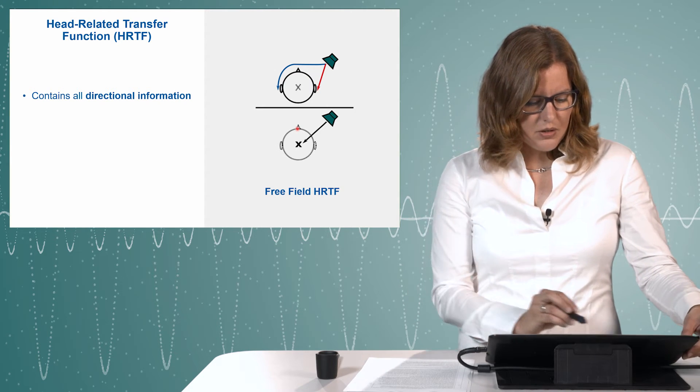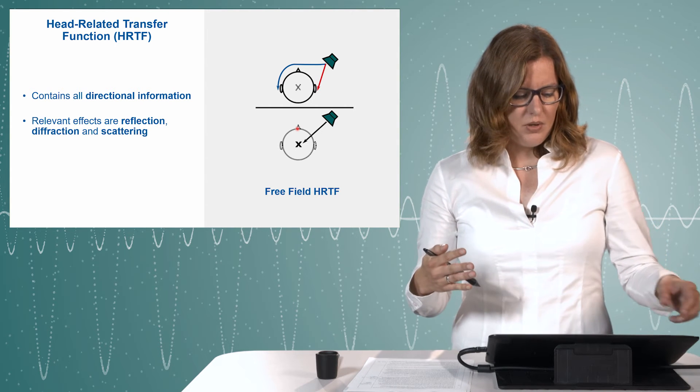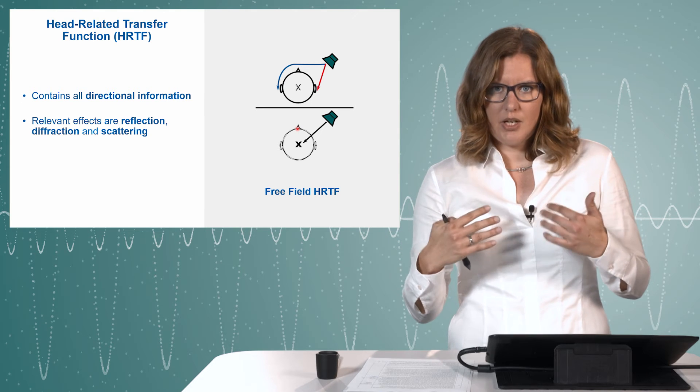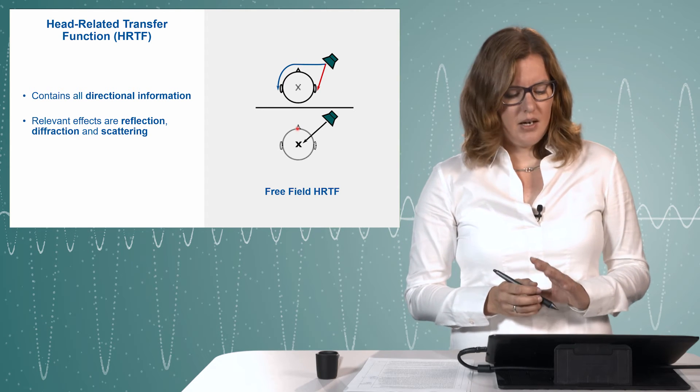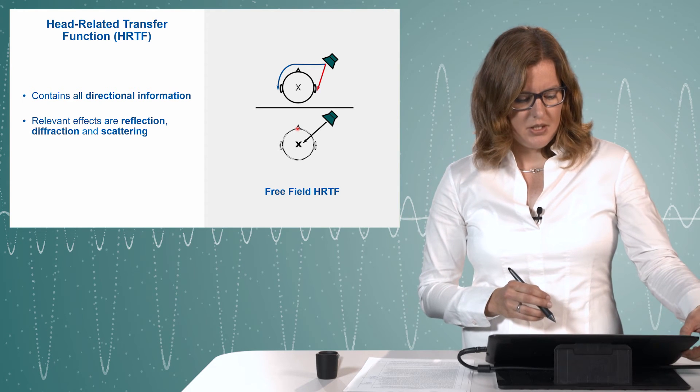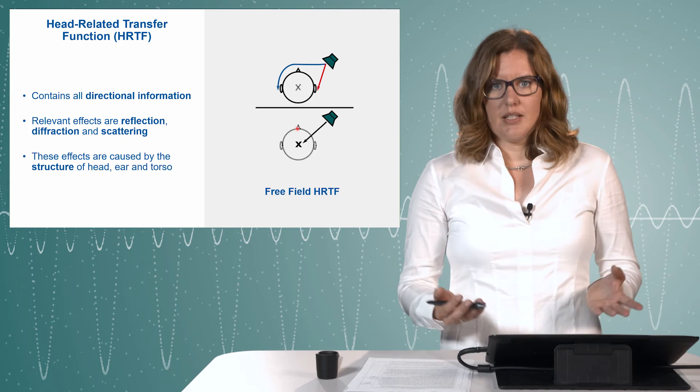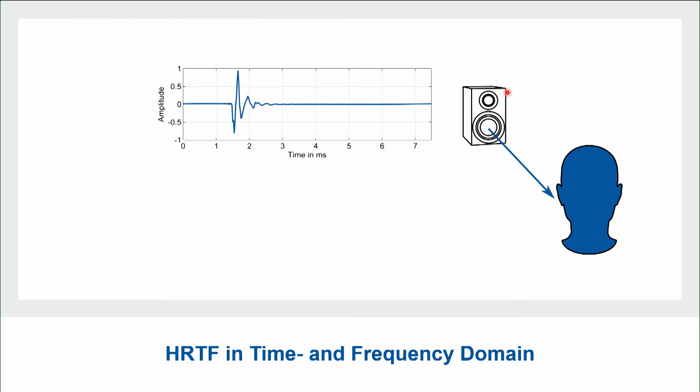This contains all directional information which is due to our head and our shape of the pinna and our torso. The relevant effects are reflection, diffraction, and scattering. We see in this HRTF effects that are only due to the structure of the head, ear, and torso. Now we will have a look into the HRTF and how it looks in time and frequency domain.